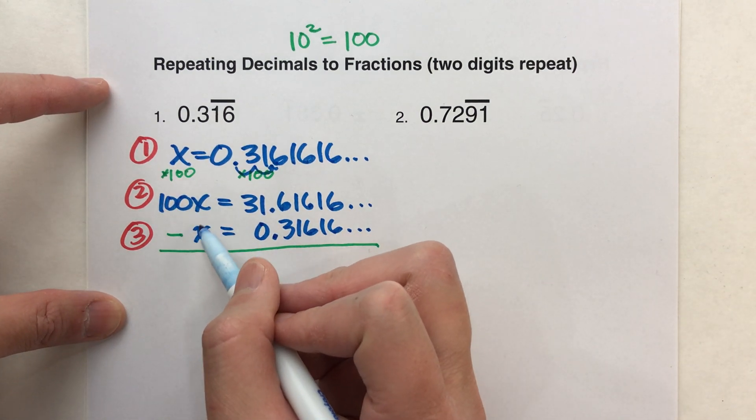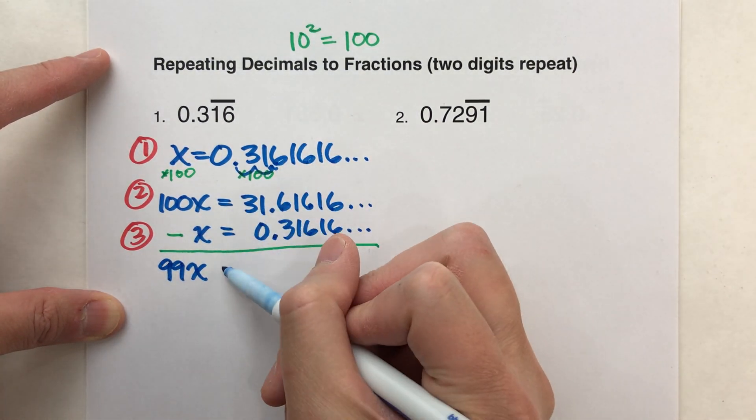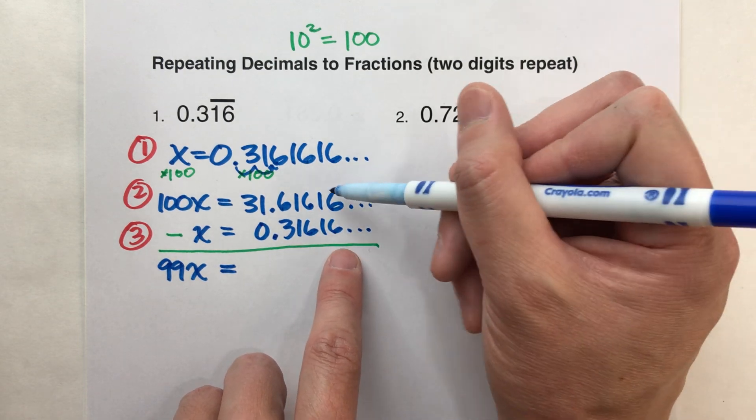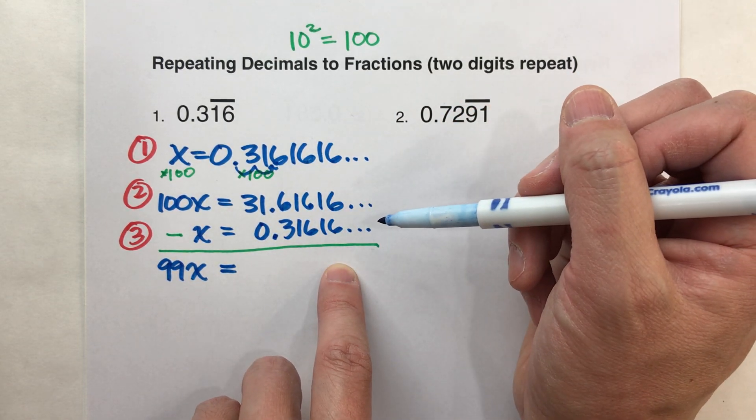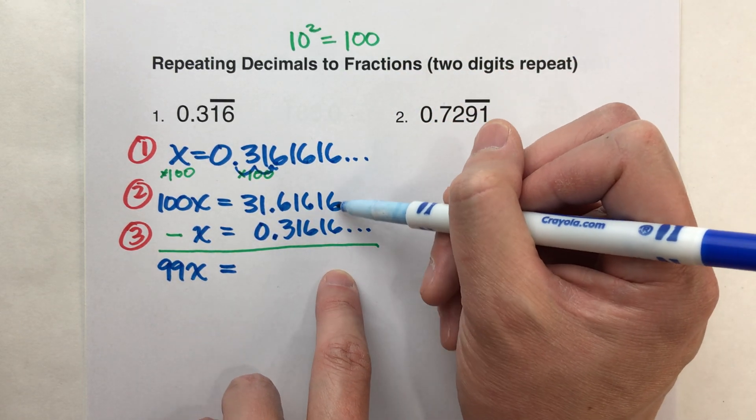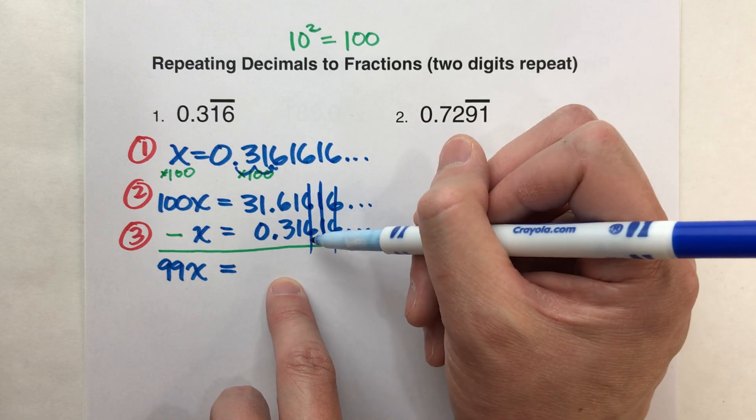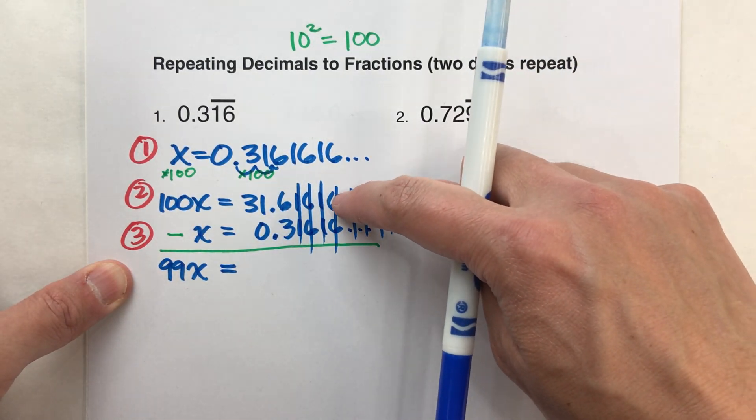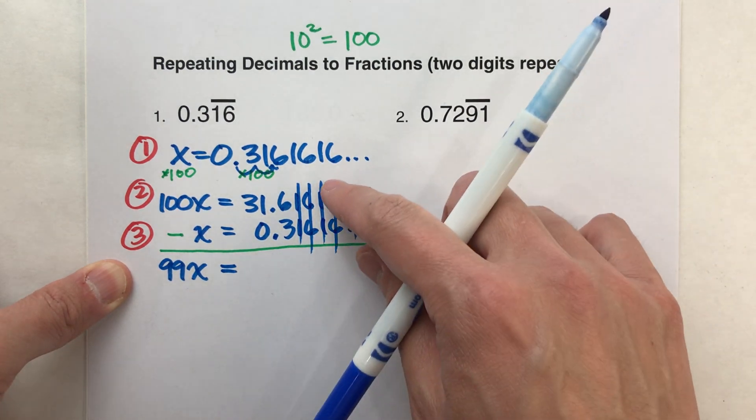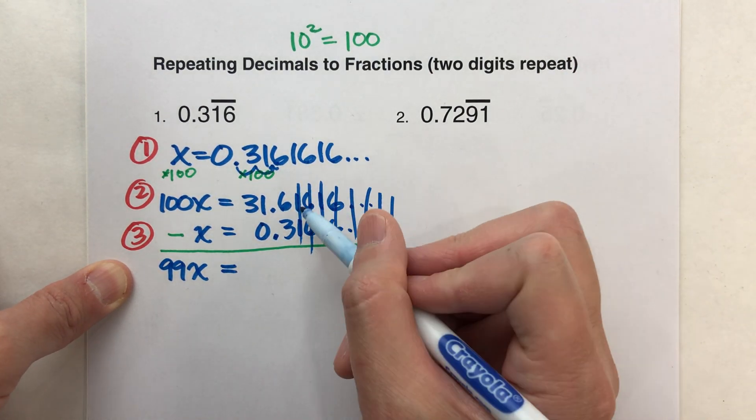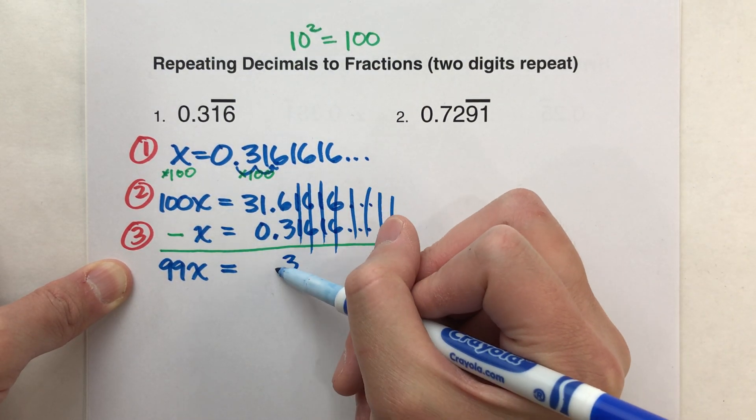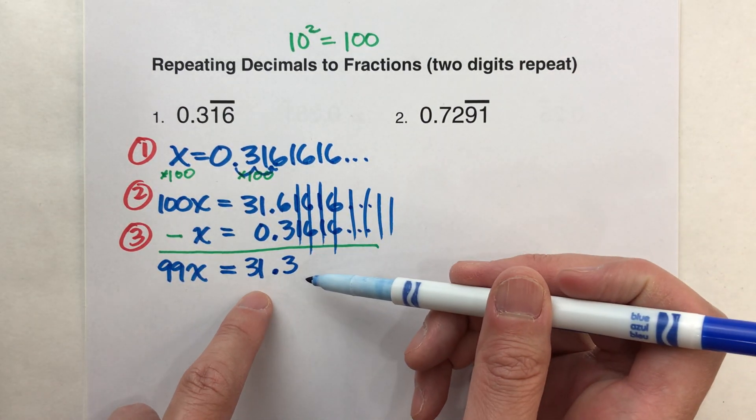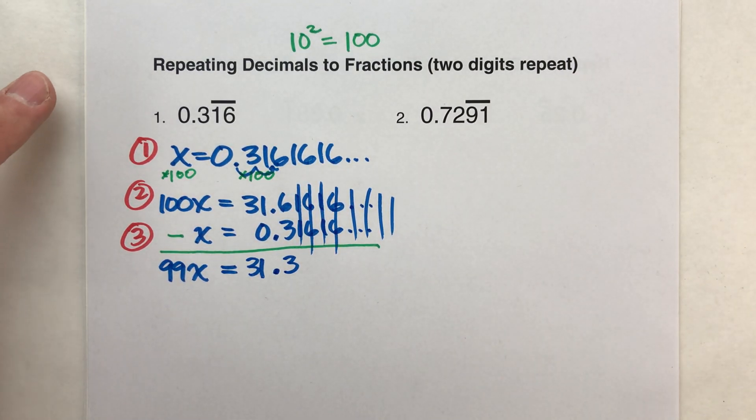So let's subtract this. 100x minus 1x is 99x. The equals drops down. And when I subtract the other side, because we multiplied both sides by 100, it will always be the case that these repeating digits will subtract off perfectly. Here's what I mean. If we start on the end and we subtract, 6 minus 6 is 0, 1 minus 1 is 0, and all the 16s afterwards, they're all going to subtract off because they'll be the same number on top as there is on the bottom. So these all zero out. Until we get to here. 6 minus 3 is 3. Drop down my decimal. 31 minus 0, 31. So when I subtracted those two repeating decimals, it comes out to 31.3 without any repeating decimals.